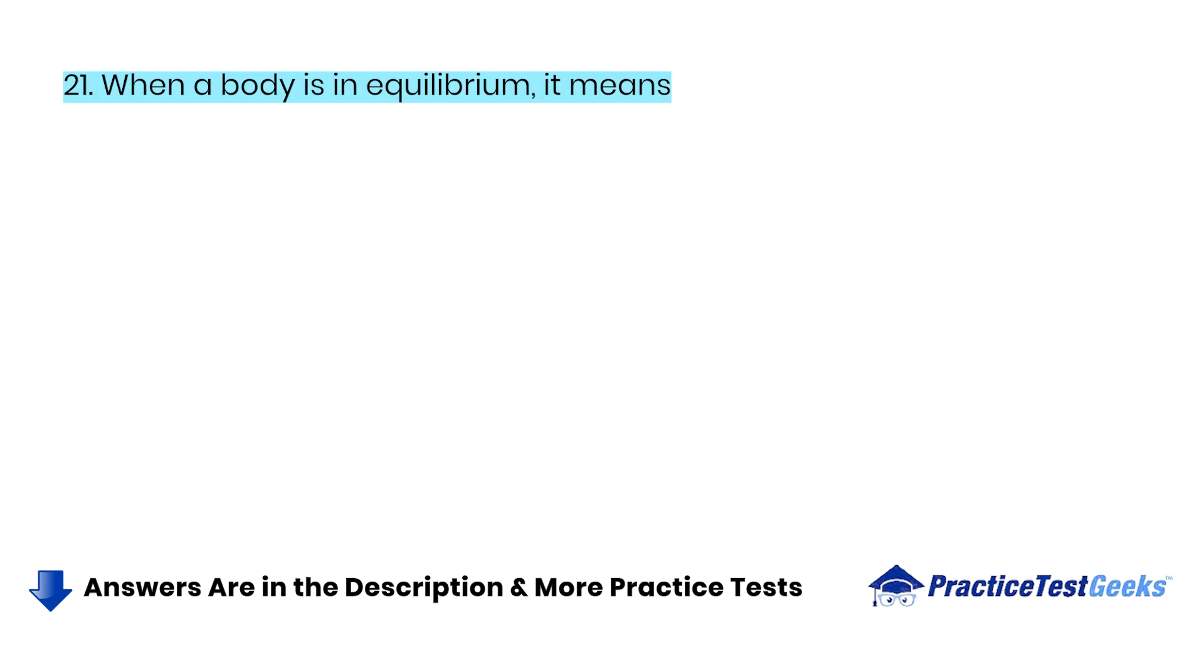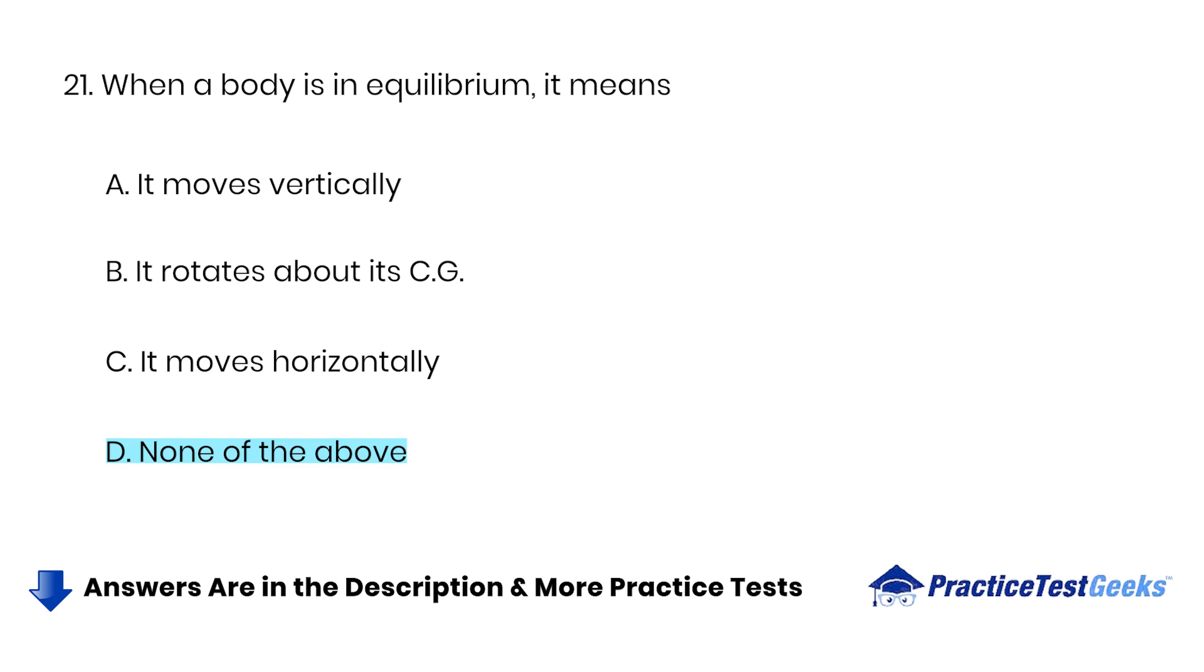When a body is in equilibrium, it means A. It moves vertically. B. It rotates about its CG. C. It moves horizontally. D. None of the above.